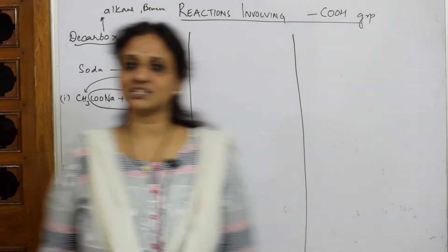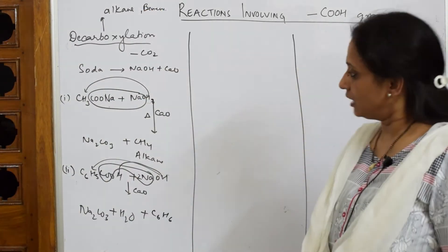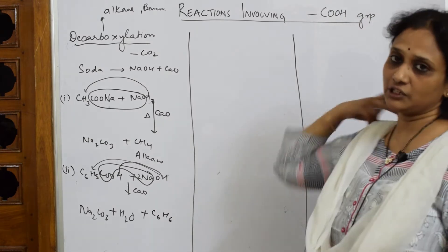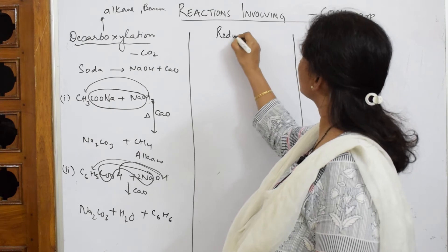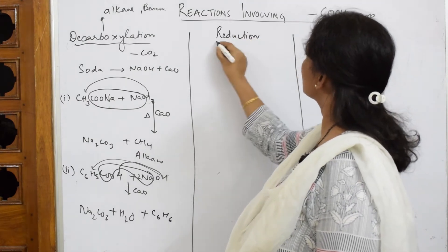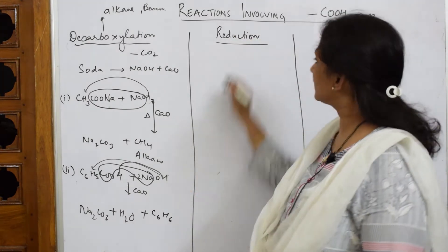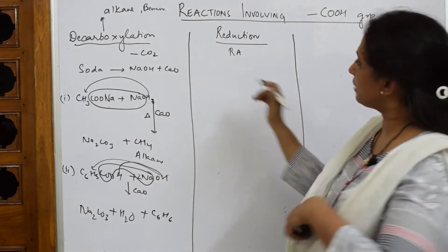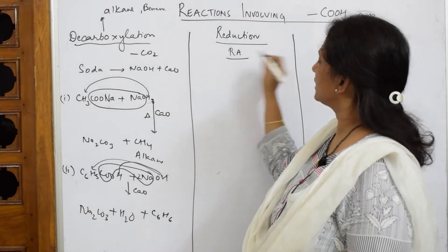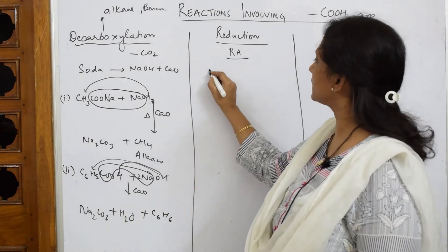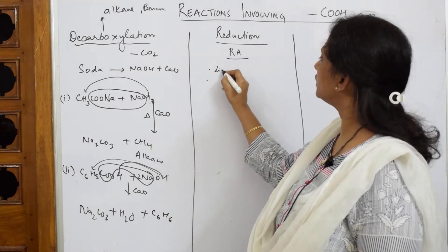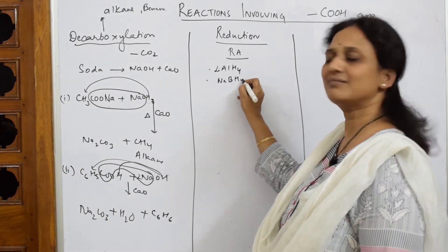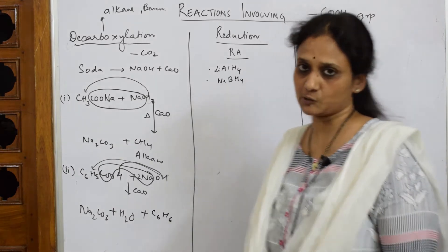Now, let us come back to the reduction of your acids. Whenever we see reduction reactions, we very well know reduction reactions require reducing agents. When I speak about reducing agents, there are two types: lithium aluminium hydride and sodium borohydride, and platinum, palladium, nickel also.